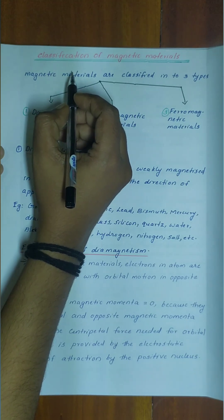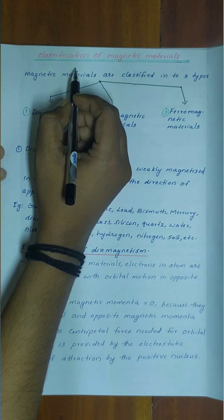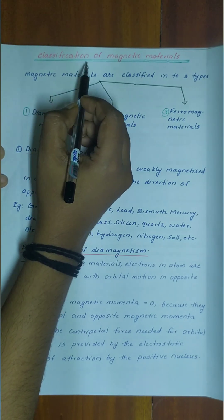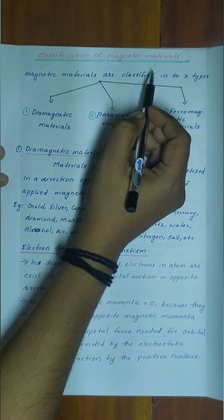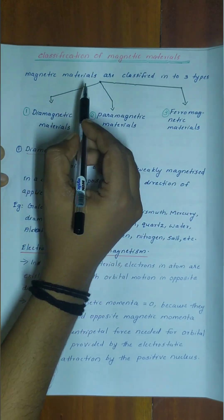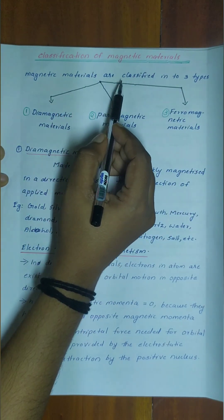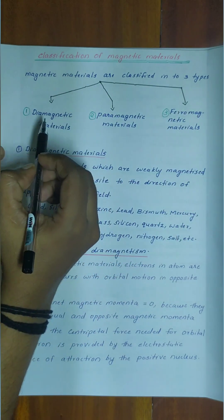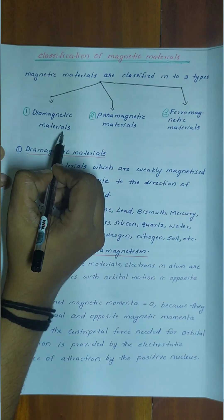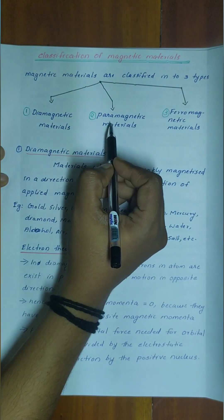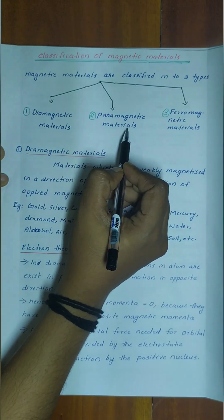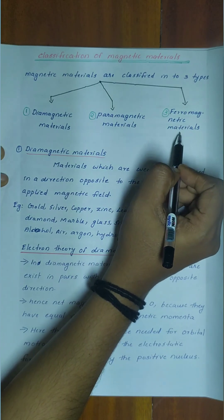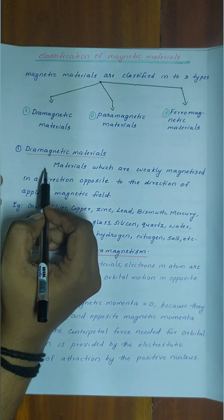Hello, good morning to all. Our next point is classification of magnetic materials. Magnetic materials are classified into three types: diamagnetic materials, paramagnetic materials, and ferromagnetic materials.